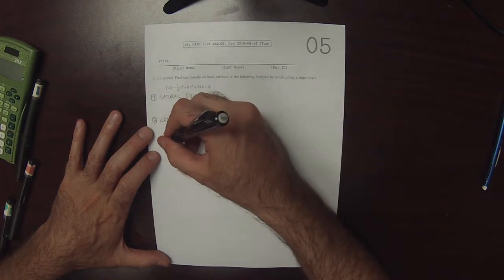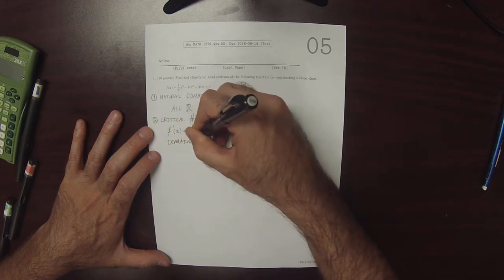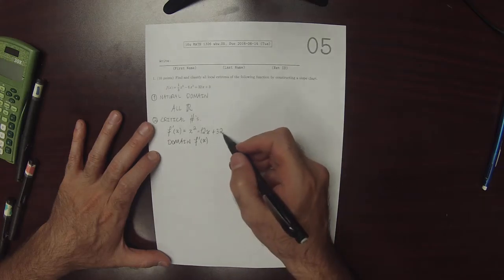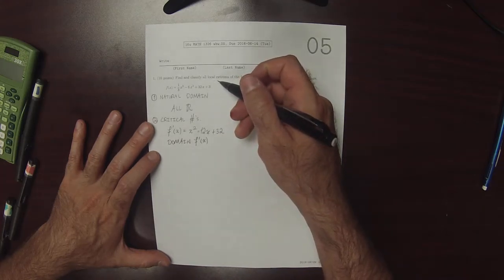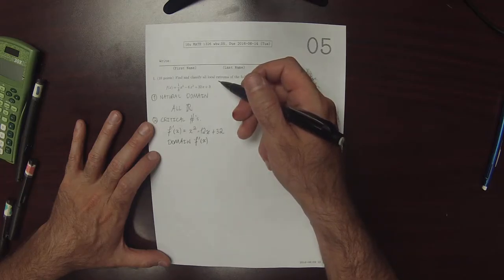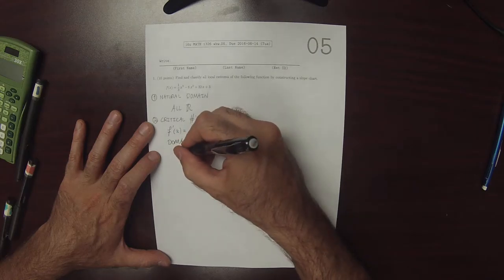So we need to check the domain of the derivative. If the domain of the derivative had changed from the natural domain of the original function, that would mean that we would have a non-smooth critical point. But it's still a polynomial, so there's no change.